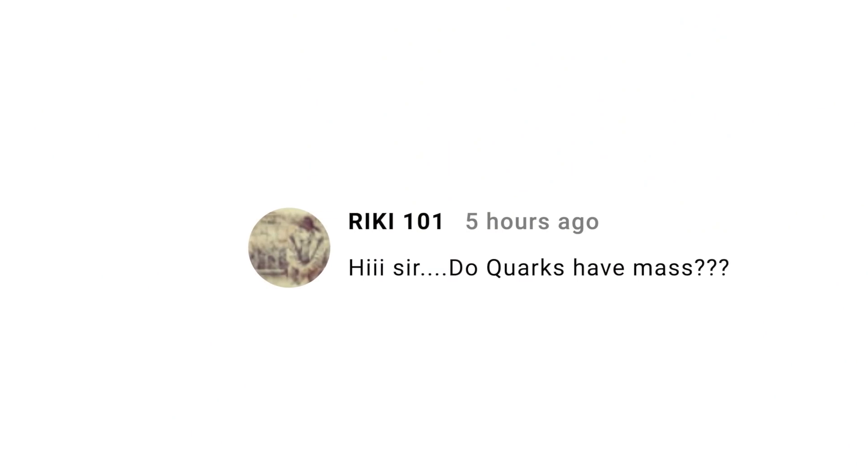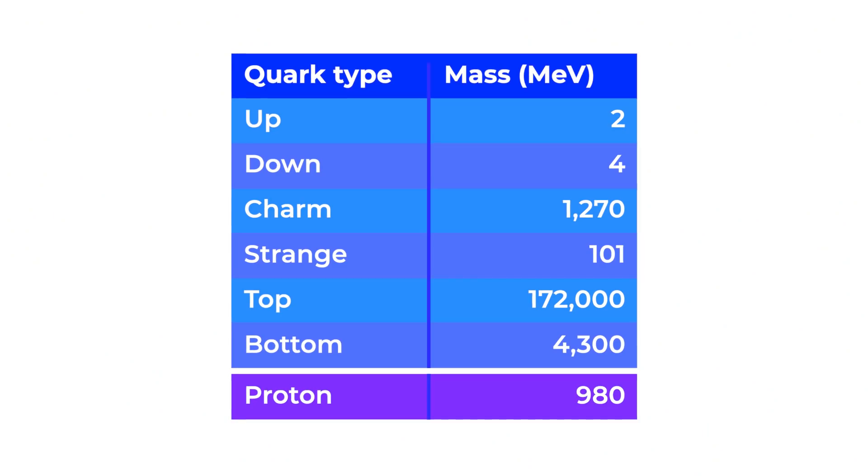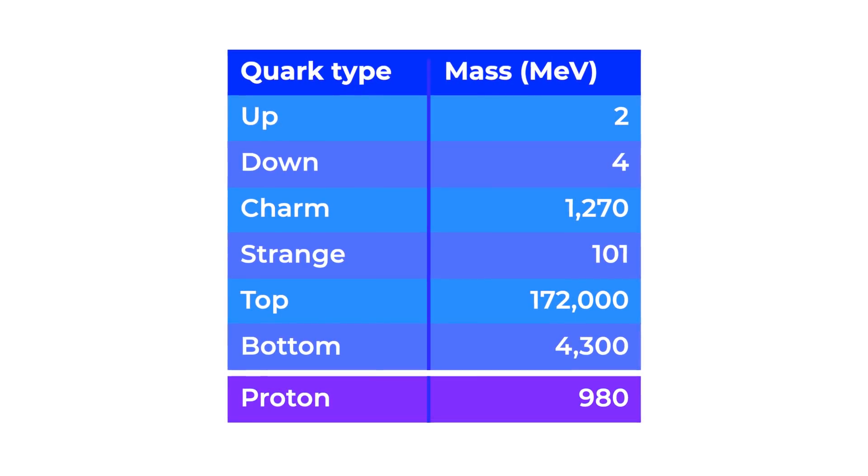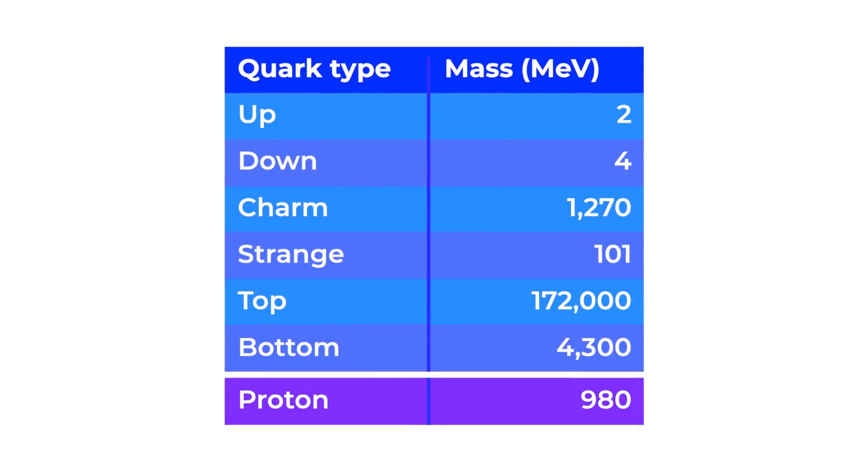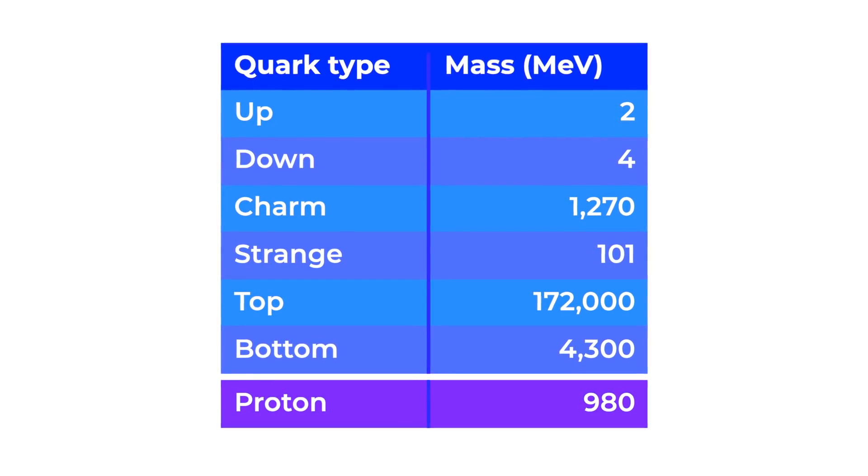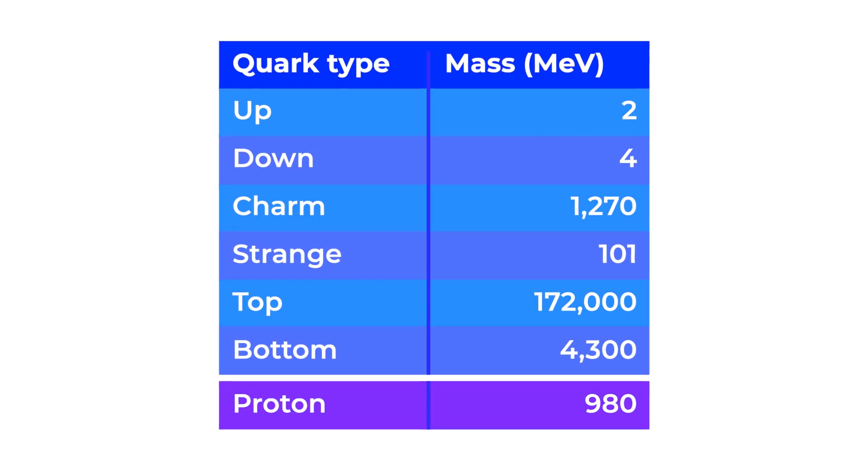Ricky101 asks, Do quarks have mass? That's a great question. I didn't talk about the mass of the quarks in my quark video, but there's actually a huge range of masses in quarks. In units where the mass of the proton is a thousand, the mass of the up and down quarks are more in the range of two to three to four. Whereas, the top quark has a mass of a hundred and seventy-two thousand, which is a huge amount of mass.